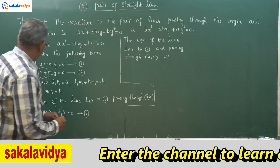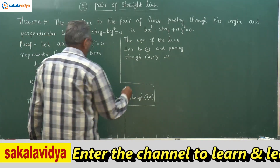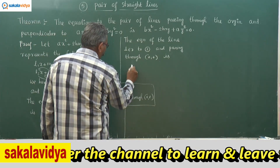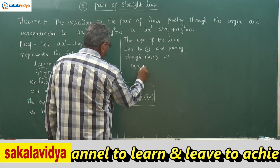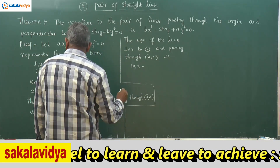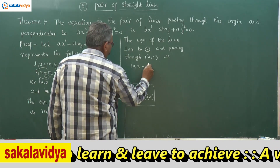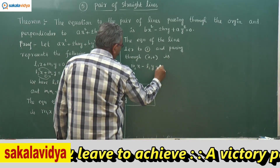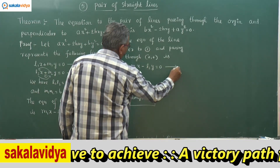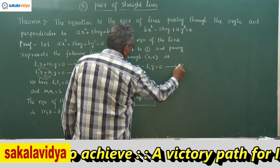Similarly, for equation 2, swap l₂ and m₂ and change the sign. So we get m₂x - l₂y = 0, say equation 4.